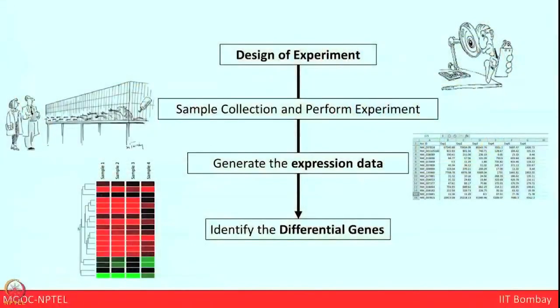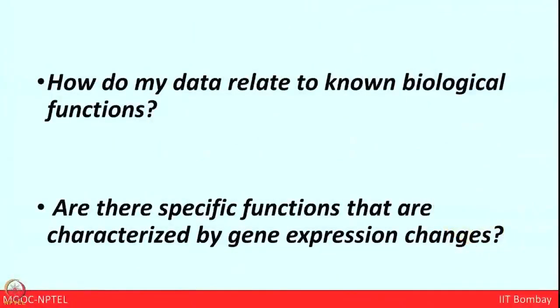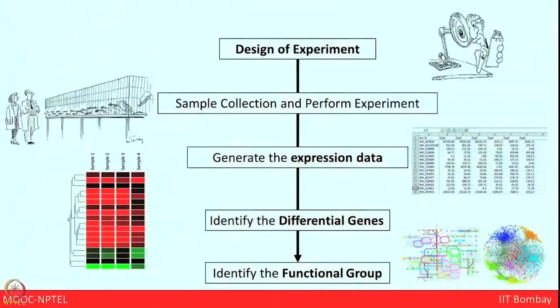Till now we have learned a lot about statistical power, primary analysis and secondary analysis to generate the expression data set. Now the main important thing is that we got a very good pattern of differential gene regulation. So the question comes: what next? I want to start with two important questions — how does my data relate to known biological function, or what specific functions are characterized by gene expression changes? After secondary analysis, the most important thing to do is tertiary analysis, which means identifying the functional group. This functional group identification is based on different pathway enrichment, network analysis, and PPI modules — that is, protein-protein interaction modules.